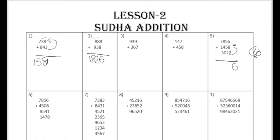Instead of putting sudha here, just put sudha on the 5. Whenever you add a number, you can take it from there. Now 2 plus 5 is 7, 7 plus 1 is 8, 8 plus 5 is 13. Put sudha here - 13 means write 3 at the bottom and 1 will become sudha.